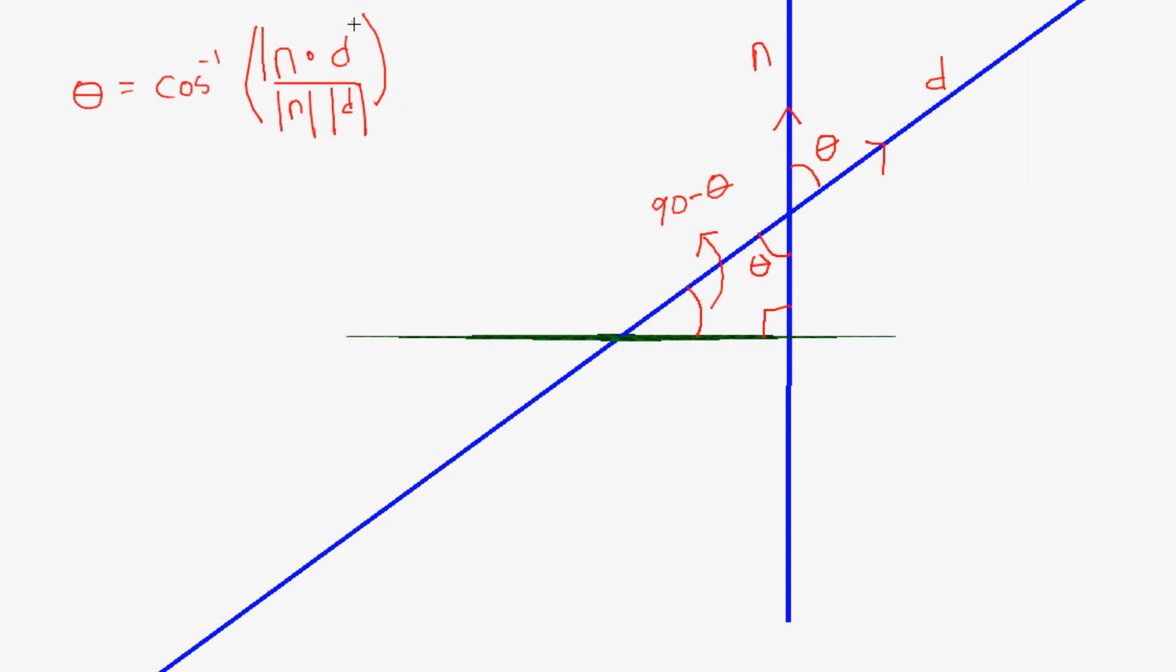Remember we also want the absolute value here. So what we can do is we can take and find this angle and subtract it from 90, or we also know that cosine 90 minus theta is equal to sine of theta. So instead of taking cosine here, I can just take sine. So my formula will be sine inverse. Either way is fine. You can take 90 minus your answer, or you can take sine inverse right from the start. And that is how you find angles between two vector planes and the angle between a vector line and a vector plane.